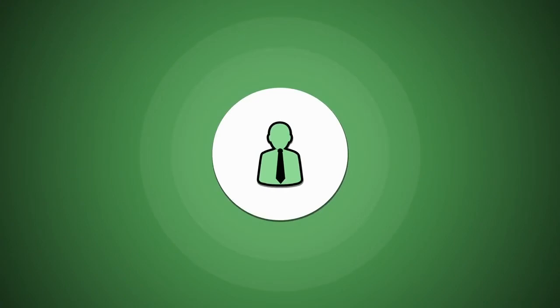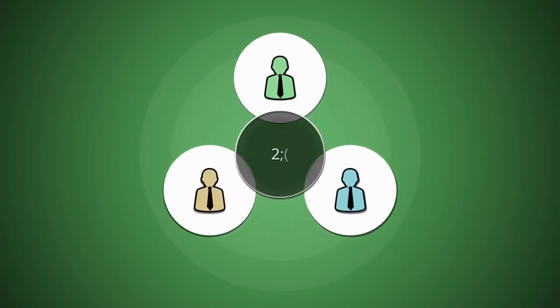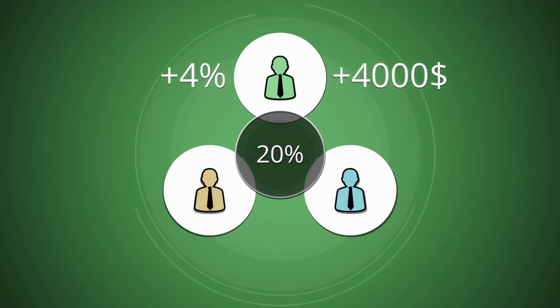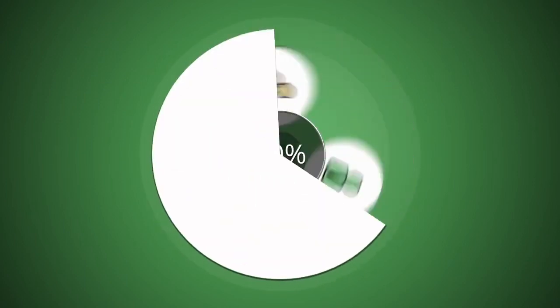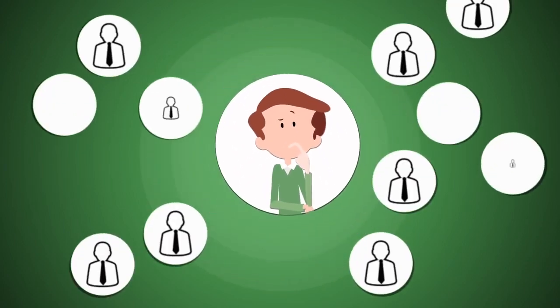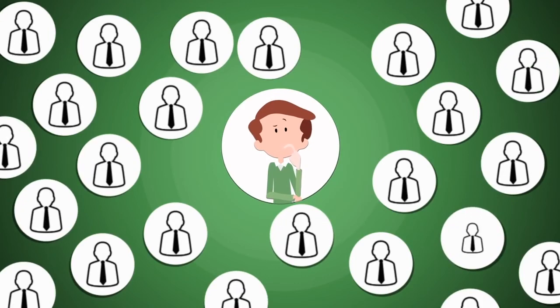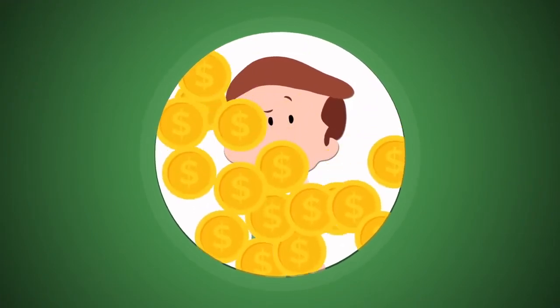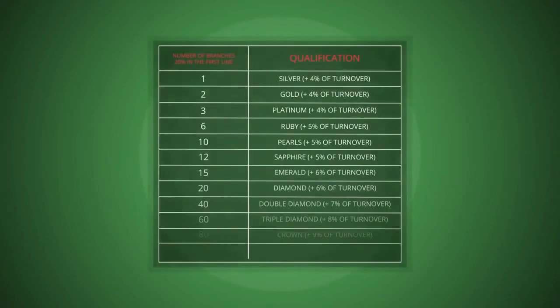From each who have reached 20% level per week, you will get 4% from the turnover of his structure. And this is from $4,000 per such turnover. Just imagine how much you will earn if all 100 people invited reach 20%. The more branches which have reached 20% in the first line you have, the more your bonus is.